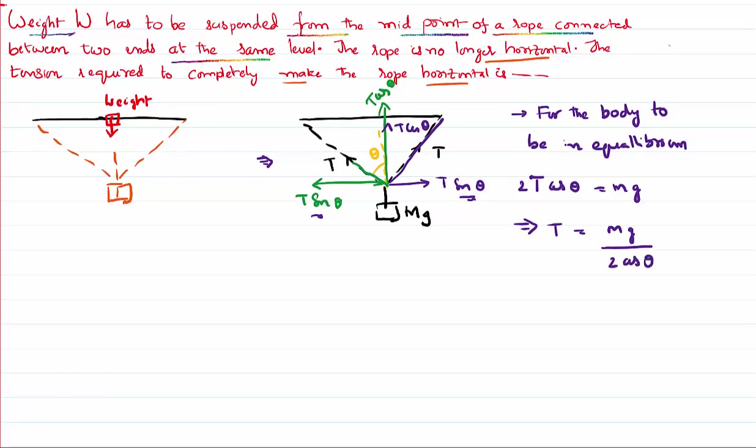Now, you want to make this string again horizontal. If we have to make this string horizontal, it's very clear this total angle has to become 180 degrees. That means this angle has to become 90 degrees. This is the angle theta in our problem. To make the string horizontal, the angle theta has to become 90 degrees.